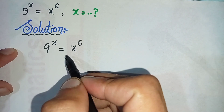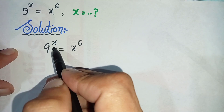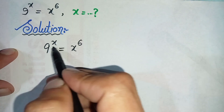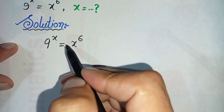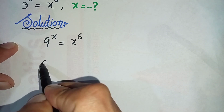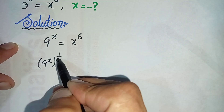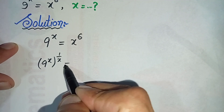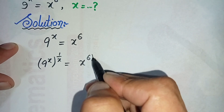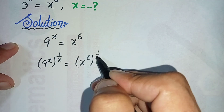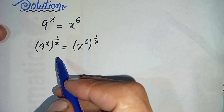To solve this question further, first we will try to eliminate x from the power on the left hand side. To eliminate this x, we will multiply 1 over x in the power on both sides. So this equation will become 9 raised to power x times 1 over x, is equal to x raised to power 6 times 1 over x.